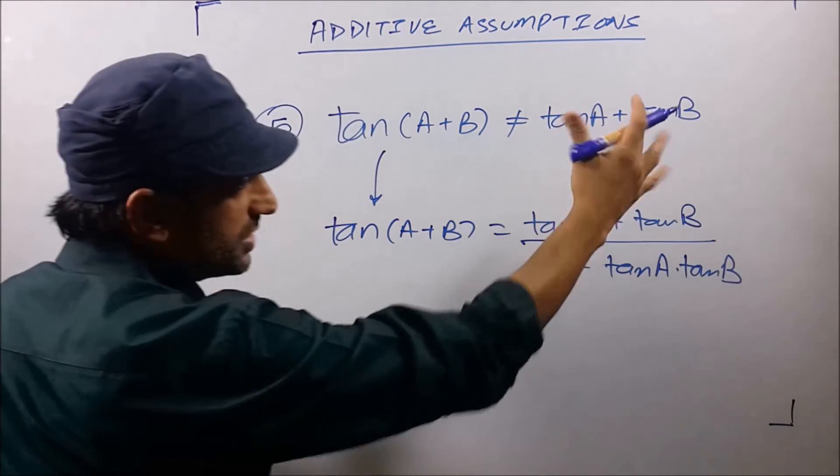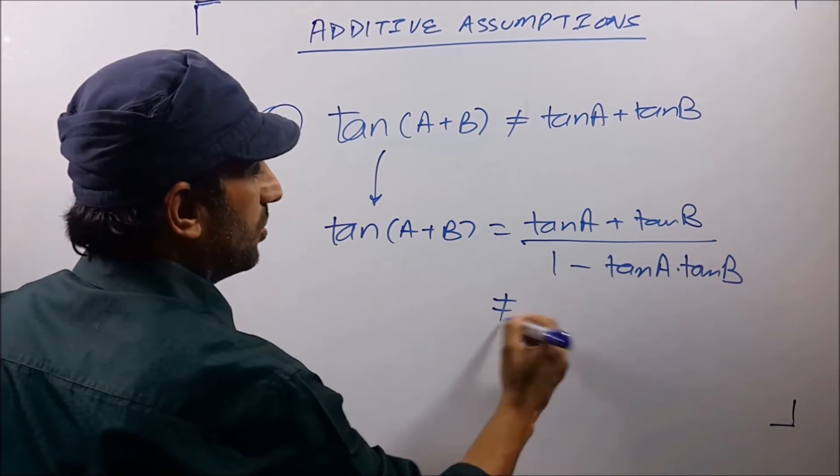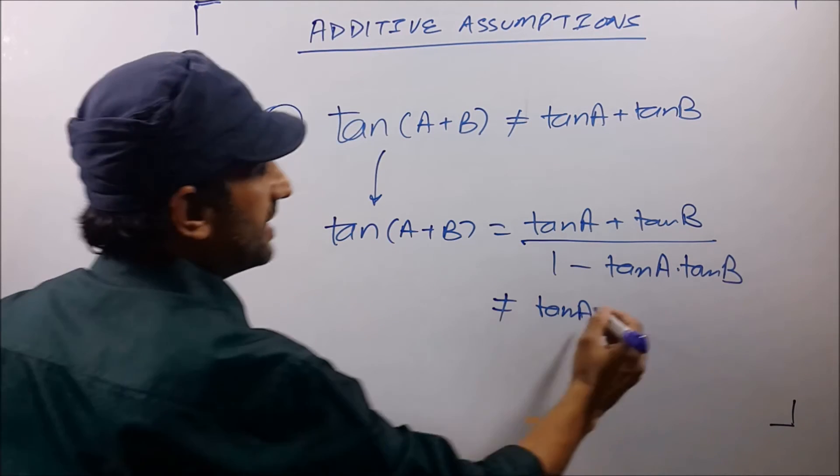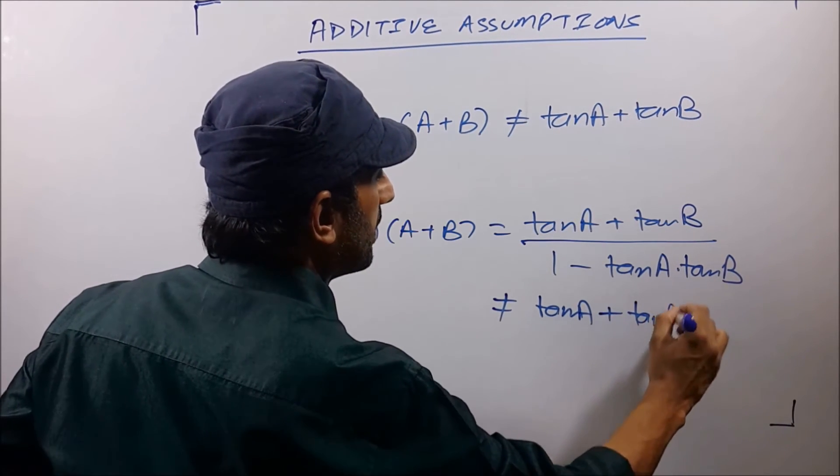So how can this be equal to tan(a) + tan(b)? So undoubtedly tan(a+b) is not equal to tan(a) + tan(b).